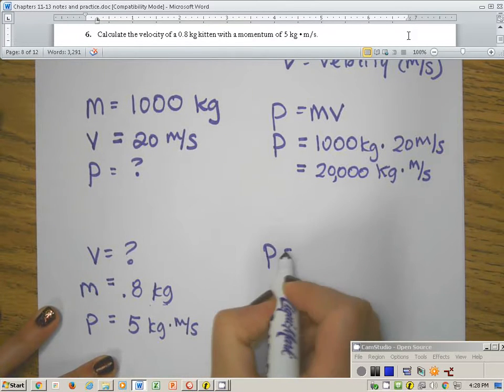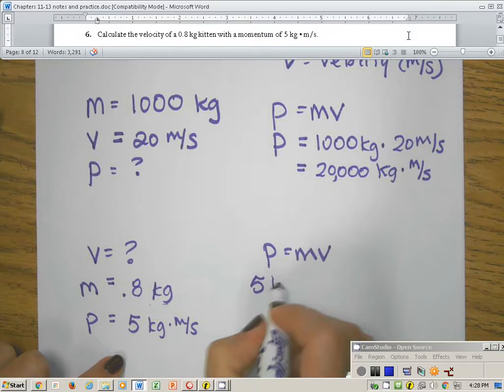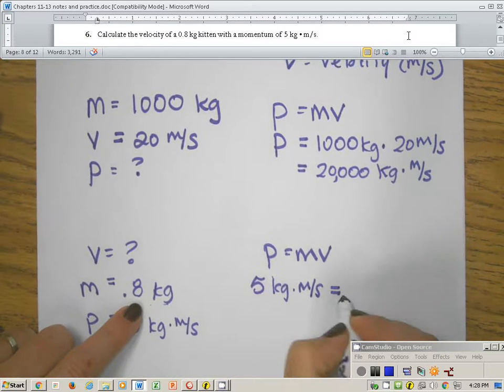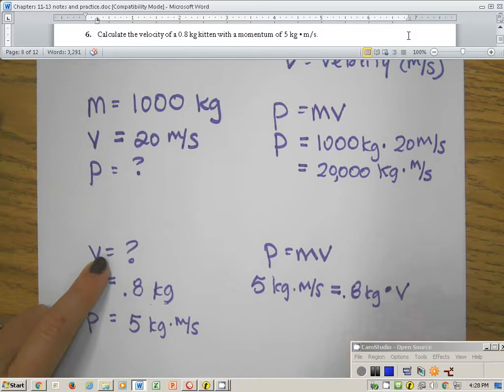It's back to the same thing, just plug it into the formula. I do have a p this time, so that's 5 kilograms times meter per second. Mass is 0.8, I have a number for that. And v, I don't know, so it's just simply times v.